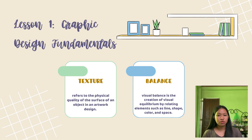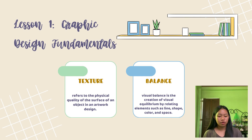There are two kinds of visual balance. First, symmetrical balance — this includes radial symmetry, where both sides of a piece are equal. Second, asymmetrical balance — both sides of your composition do not contain the same elements, but contain almost the same visual weight.